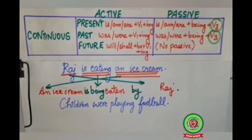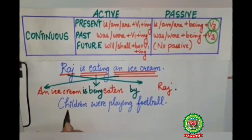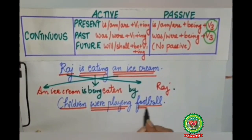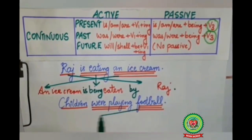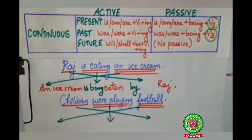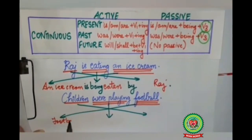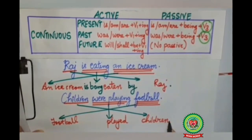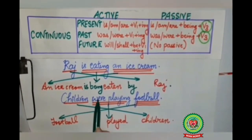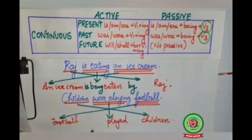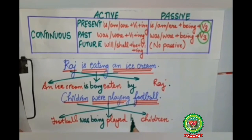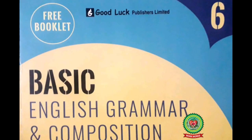Now the second sentence: 'Children were playing football.' Who? Children — subject, single underline. 'Were playing' — action word, double underline. What? Football — triple underline. Football comes in the beginning, children go to the last. 'Playing' changes to 'played'. Football is singular, so 'was' is used. We add the word 'being'. The answer becomes: 'Football was being played by children.' Full stop.